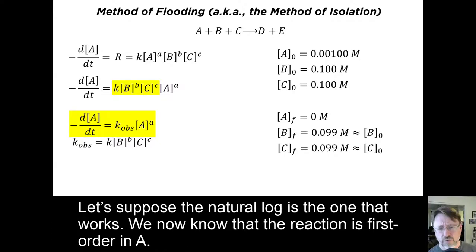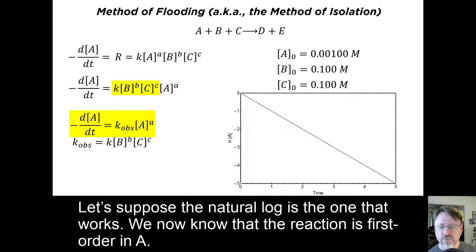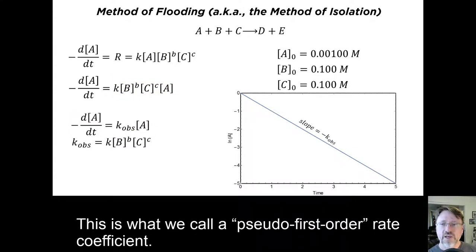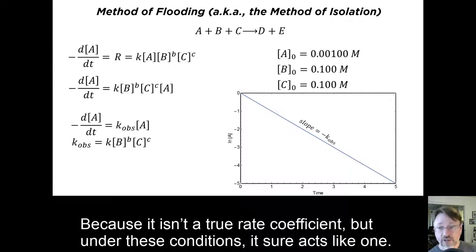Let's suppose the natural log is the one that works. We now know that the reaction is first order in A. But there is something else we know as well. The slope of the line is negative K observed. This is what we call a pseudo first order rate coefficient. Because it isn't a true rate coefficient, but under these conditions, it sure acts like one.